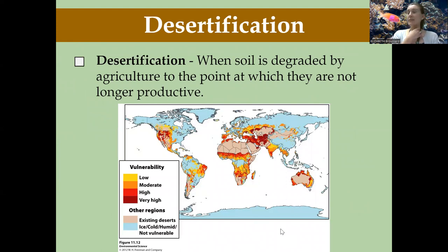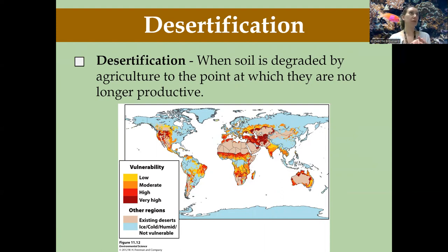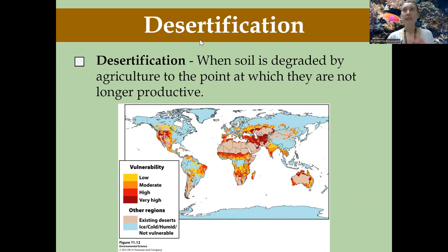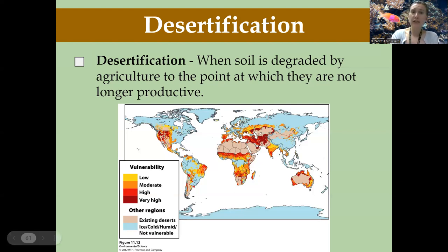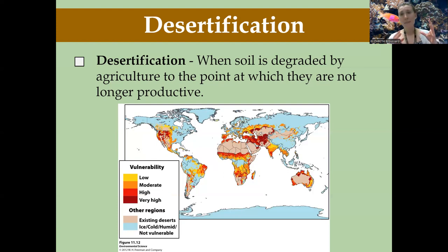One thing we worry about, especially when thinking about desertification, is when the soil becomes so degraded — overgrazed, over-tilled, depleted of nutrients — that it can no longer produce high yields. It becomes an area of high desertification, unable to support much crop production. We're seeing a lot of vulnerability to this in crop-producing areas. In the United States, there's a lot of desertification happening in the breadbasket of America. Unfortunately, this vulnerability to desertification is occurring all over the world.